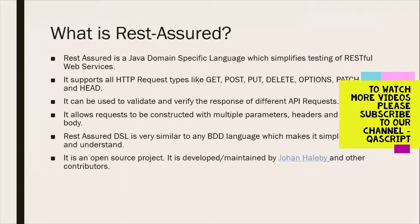Let's first understand what REST Assured is. It's a simple Java library that provides you a domain-specific language which simplifies testing of your RESTful web services or APIs. It supports all HTTP request types — be it GET, POST, DELETE, OPTIONS, PATCH, or HEAD — so almost all HTTP requests are supported by this Java library.